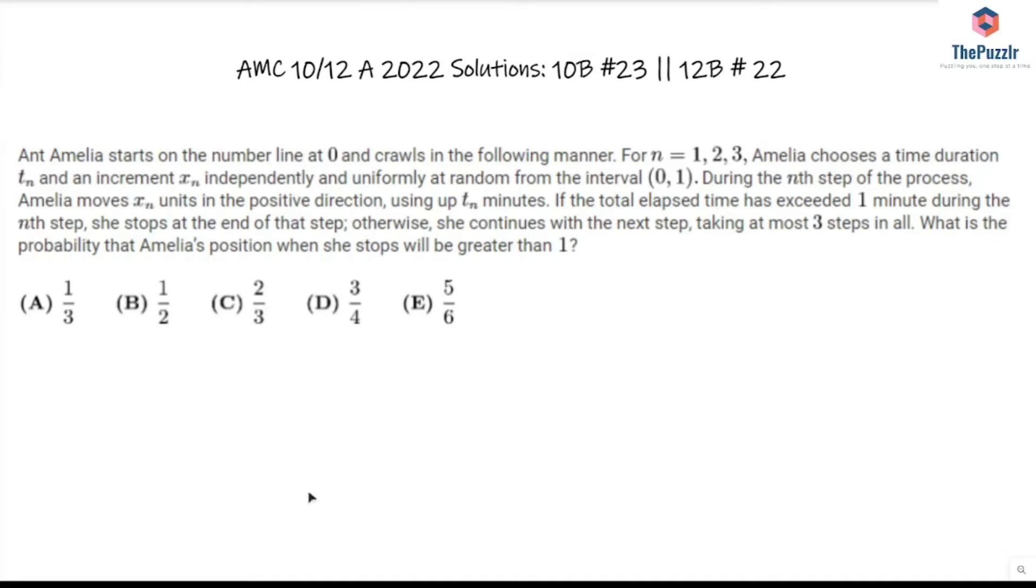Otherwise she continues with the next step taking at most three steps in all. What is the probability that Amelia's position when she stops will be greater than 1? Well first of all the fact that it's at most three steps is really going to limit the problem. On the AMC when you have so much text there's usually some sort of limited condition that makes the problem not that hard compared to what it looks like at first glance. So we have three steps in all.